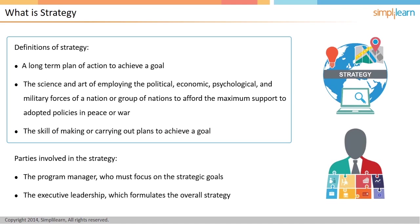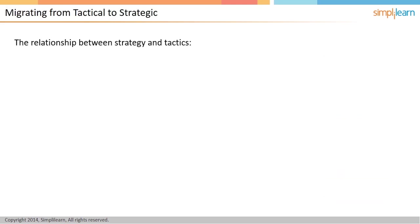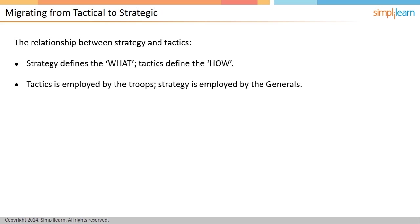One of the fundamental aspects of transitioning from project management to program management level is the transition from the tactical to strategic. While strategy defines the what, tactics define the how. In military, it is said that troops on the ground determine the tactics, while the generals away from the battlefield define the strategy. As a program manager, one has to provide the team with a sense of direction as to where the program is headed, and then trust the troops to come up with the right tactics.